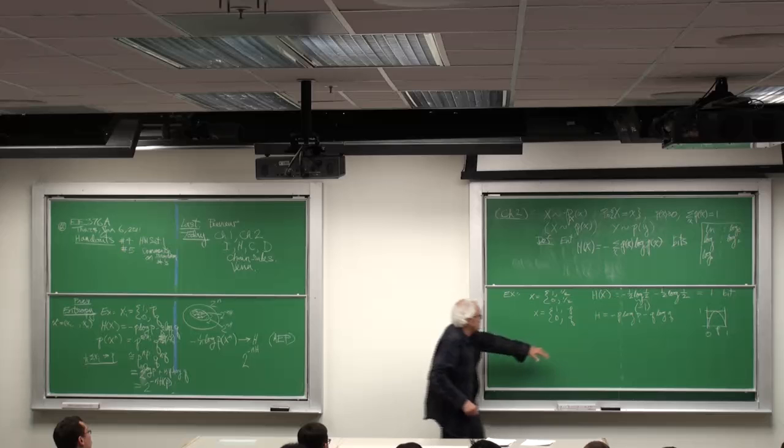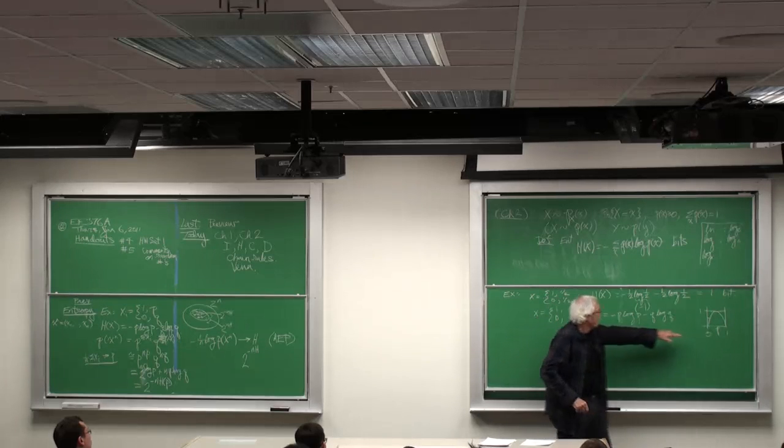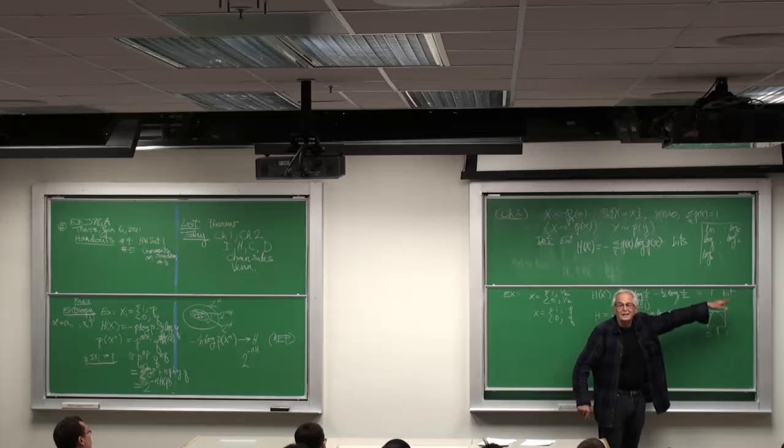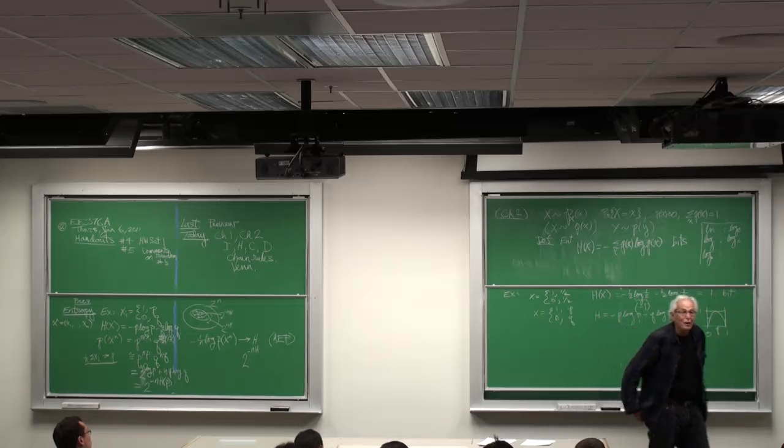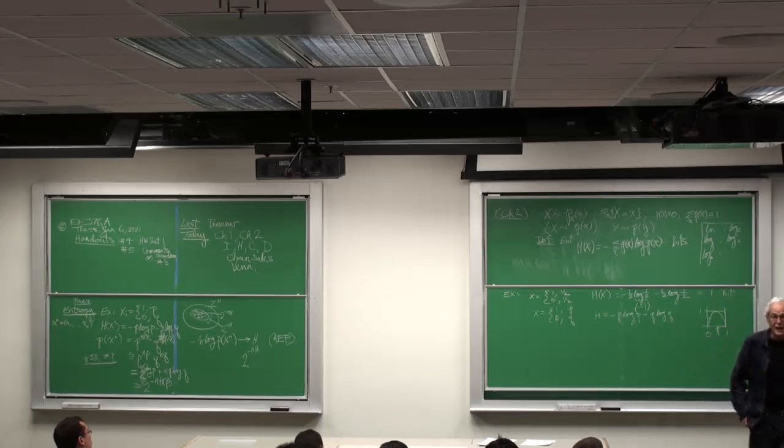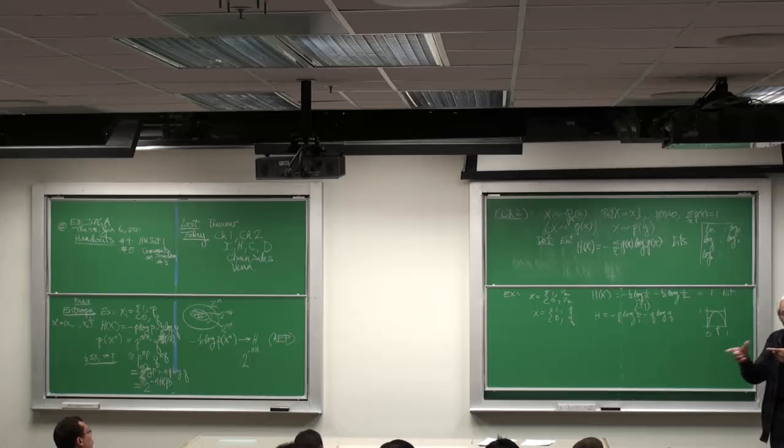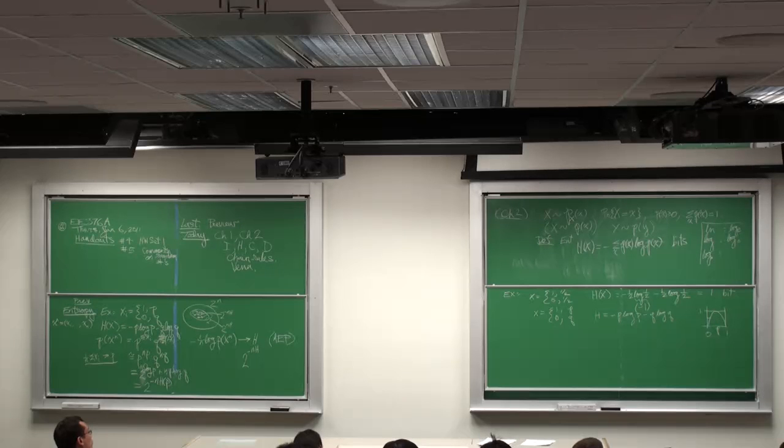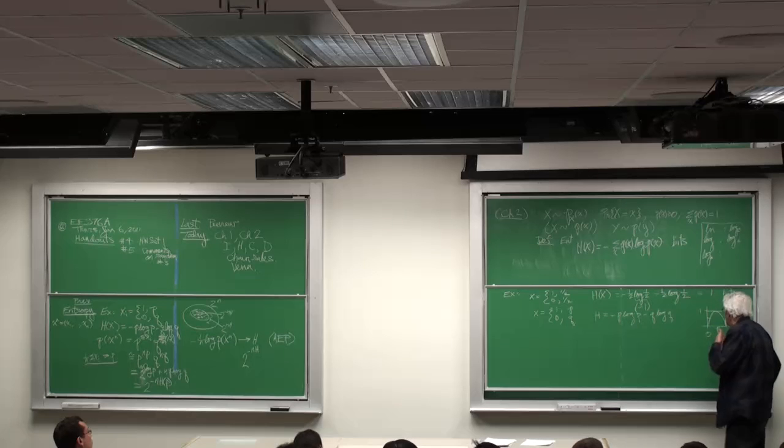If you take, say, 2N of the biased coin flips, they'll map into N of the unbiased coin flips and back and forth. In other words, you can get a probability equality there.